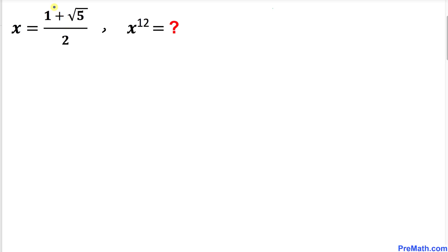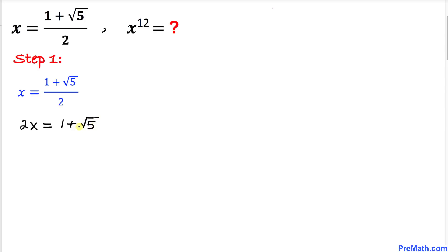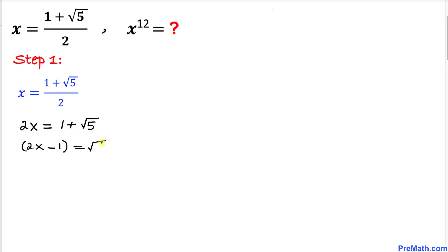Let's focus on this golden ratio. I've copied it down and I'm going to make it a fraction on the left-hand side by putting 1 underneath x. Now we are going to cross-multiply, and if we cross-multiply we get 2x equals 1 plus square root of 5. We are going to isolate the radical part, so I'm moving the 1 to the other side: 2x minus 1 equals square root of 5.